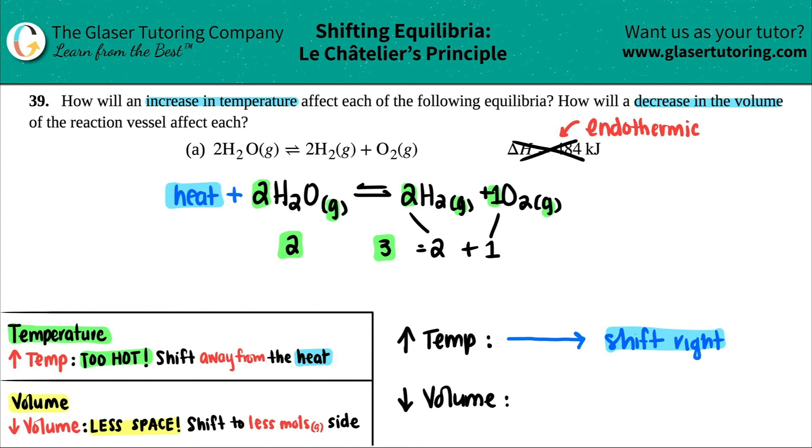And when you're decreasing the volume, you shift to the less mole side. So I'm going literally the lower number. So I'm going this way, which means that I'm just going to shift to the left. And if that's the case, oh, I don't like that. Let's keep it blue. And if that's the case, if I'm going this way, I'm going to increase this amount and decrease this amount. There you go.